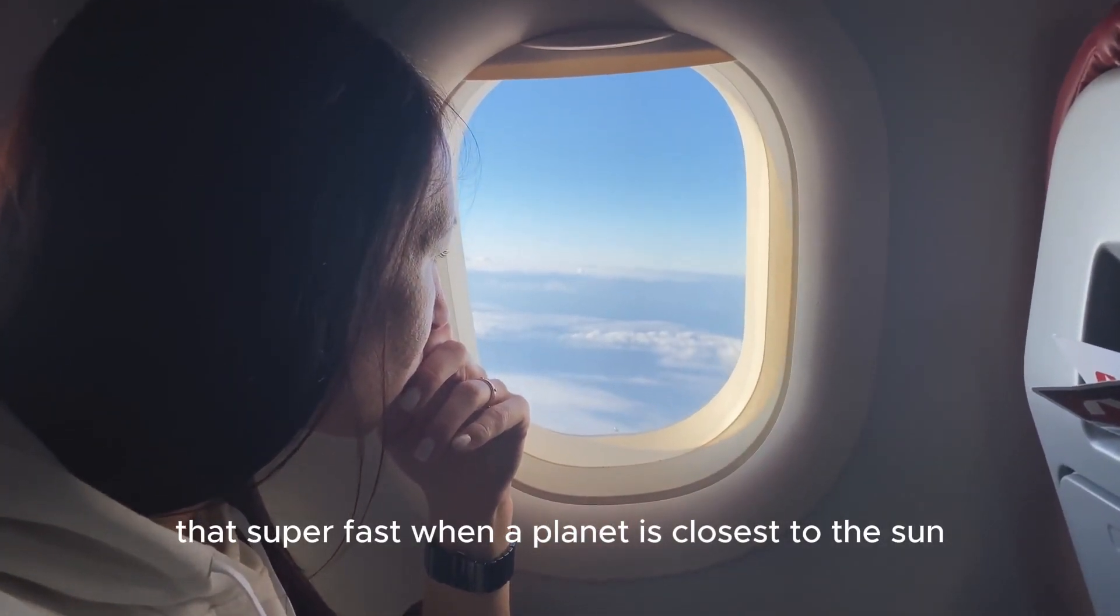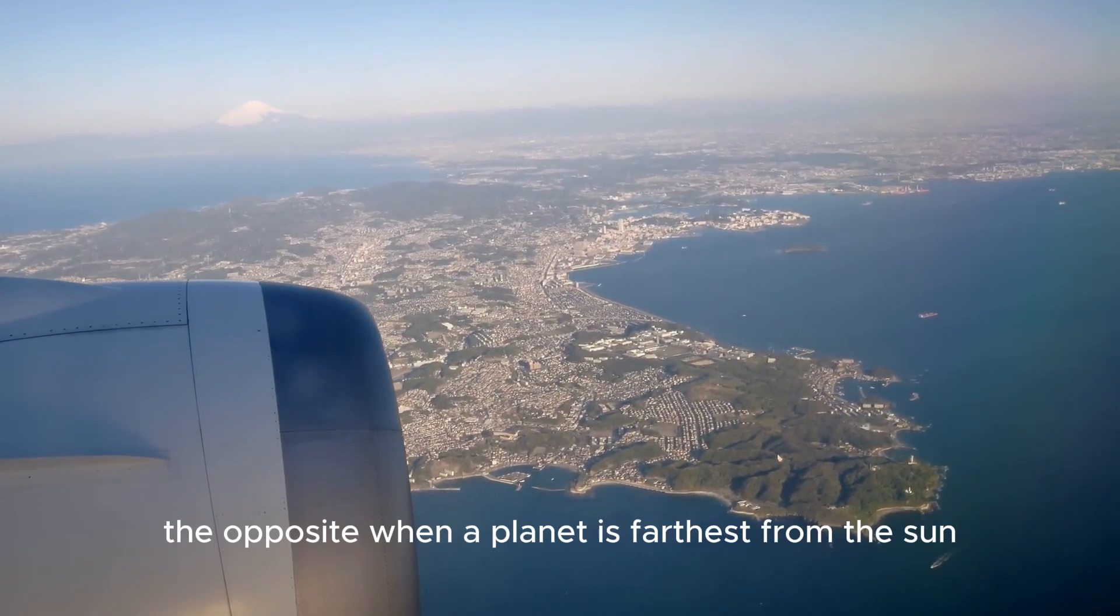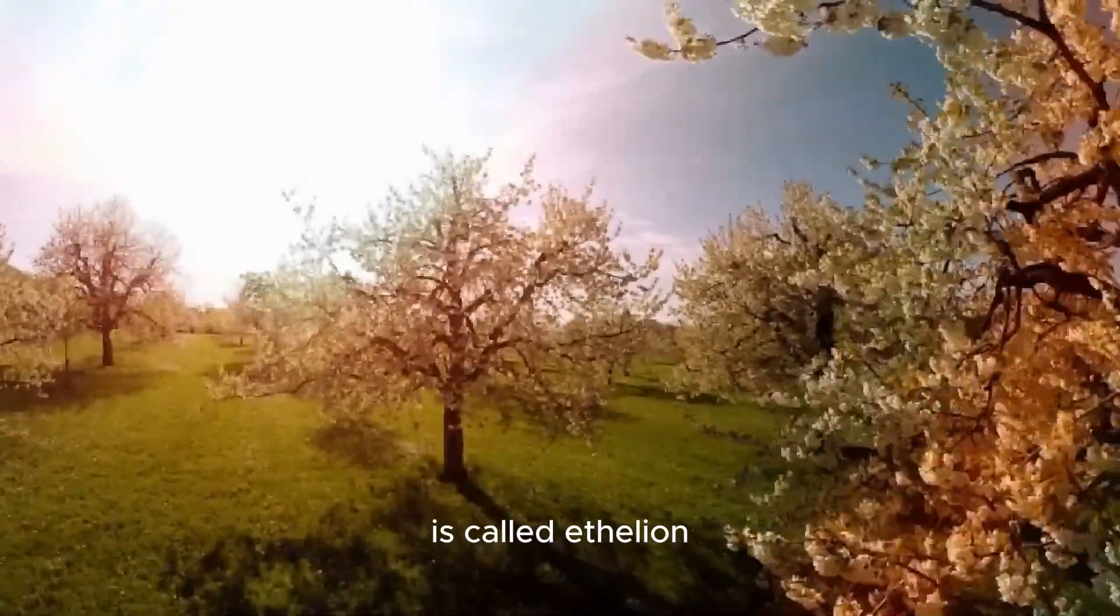When a planet is closest to the sun, it's called perihelion. The word means around the sun in Greek. The opposite, when a planet is farthest from the sun, is called aphelion.